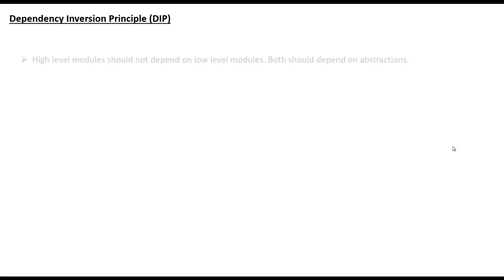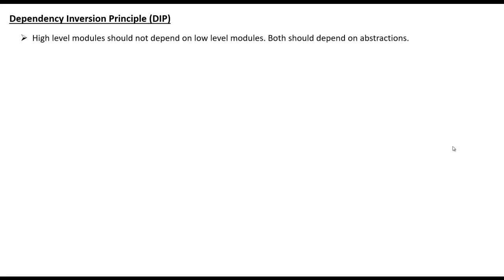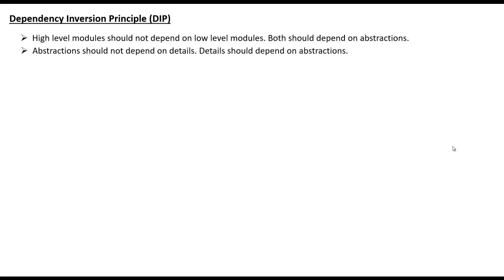I am going to explain the dependency inversion principle in theory followed by a code example. The dependency inversion principle states that any high-level module should not be dependent on a low-level module. Both should depend on abstraction, and abstraction should not depend on detail — details should be dependent on abstraction.